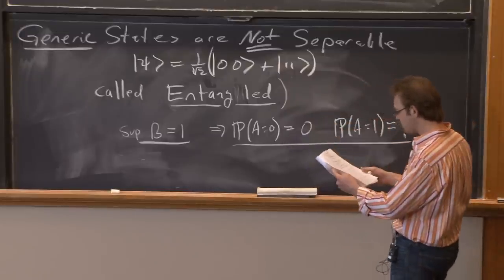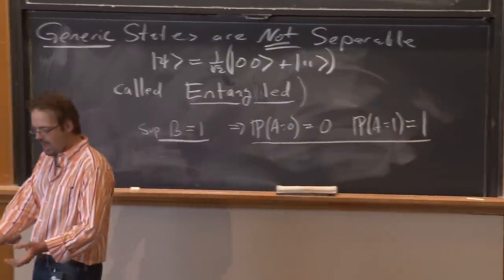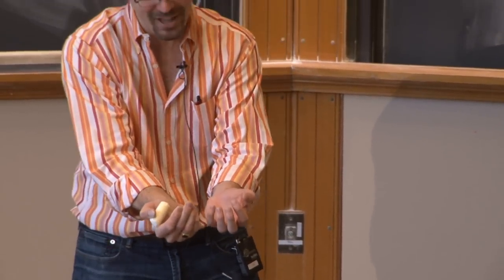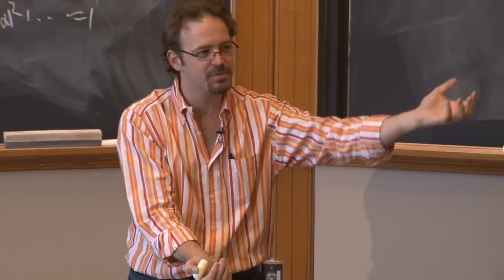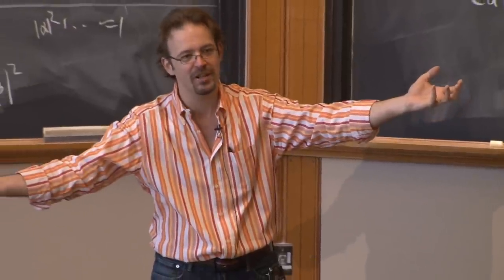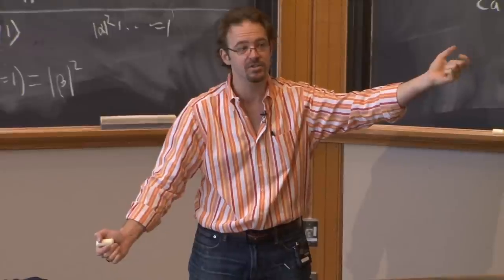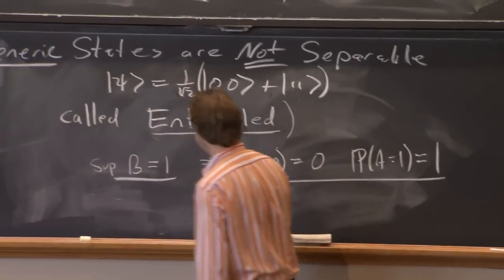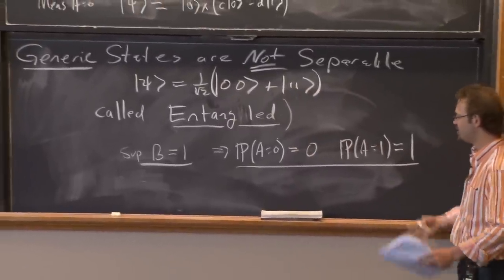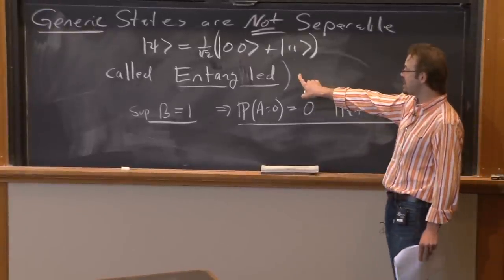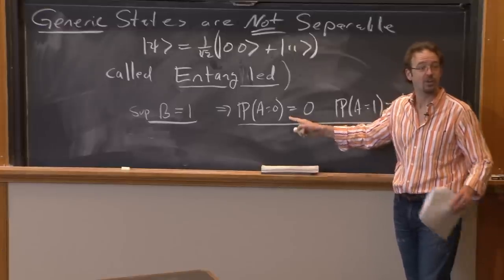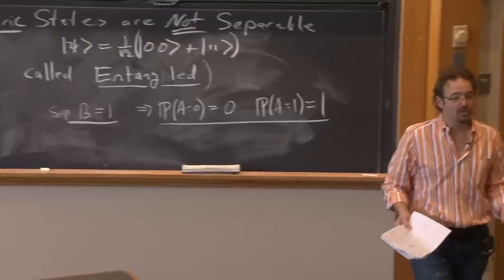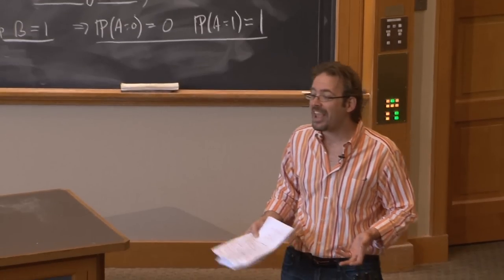We call this correlation entanglement. The generic state is entangled — it's a bit like calling mice mice and calling all other mammals non-mice. We give them a special name because separable states do more or less what you'd expect classically: there are no strange correlations. But in a generic state, something funny happens. Given ψ = 1/√2 (|0,0⟩ + |1,1⟩), the probability that I measure the first particle to be 0 is 1/2. But if I measure the second particle to be 1, the probability that the first is 0 becomes 0, and that it is 1 becomes 1. Measuring the second qubit alters the probability distribution for the first qubit.